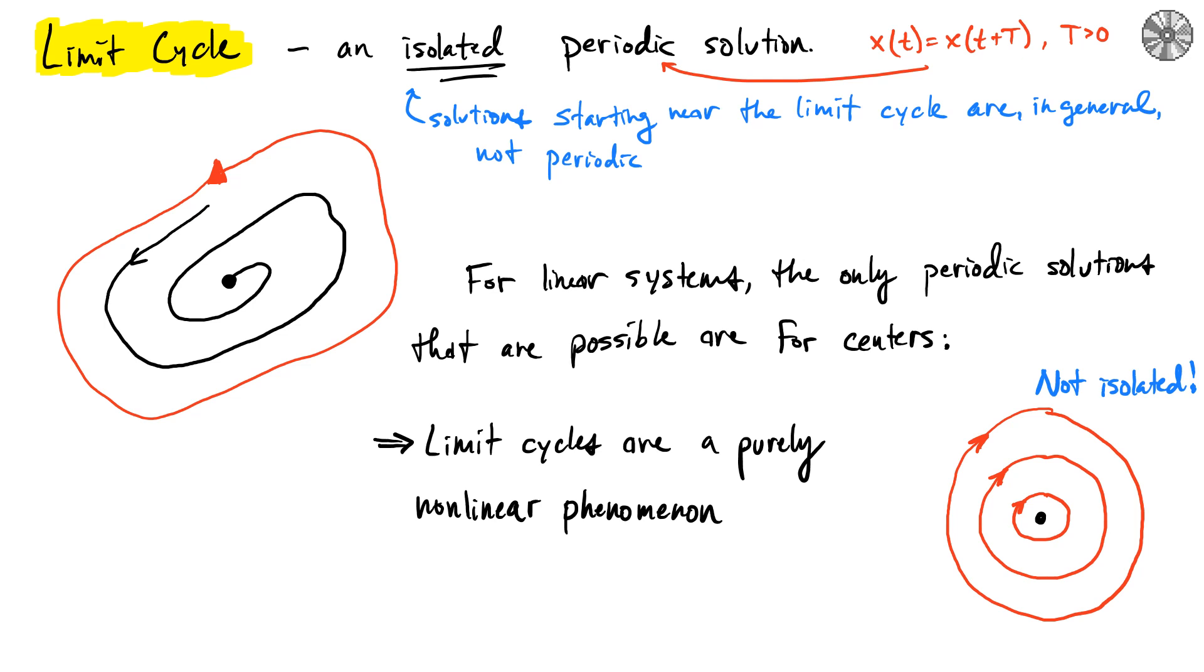In describing the qualitative behavior of nonlinear dynamical systems, we need to introduce one more type of feature that can be seen on the phase plane portrait and that governs its dynamics: a limit cycle. This is a purely nonlinear phenomenon and it is the presence of an isolated periodic solution in the phase plane.